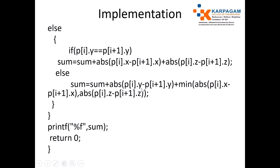If the Y axis values are different, find the absolute difference of first coordinate Y value minus second coordinate Y value, plus the minimum of the absolute difference of the X values and the absolute difference of the Z values. This finds the shortest distance between the data points. Finally, print the sum. This is a difficult problem for which you won't find any reference or answers on the internet.